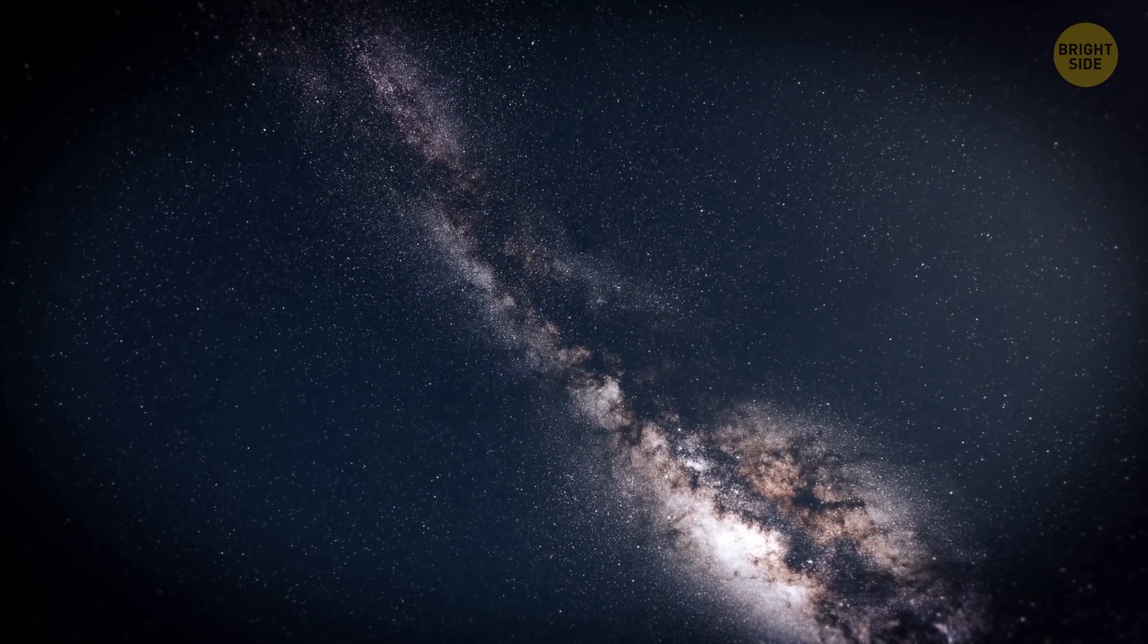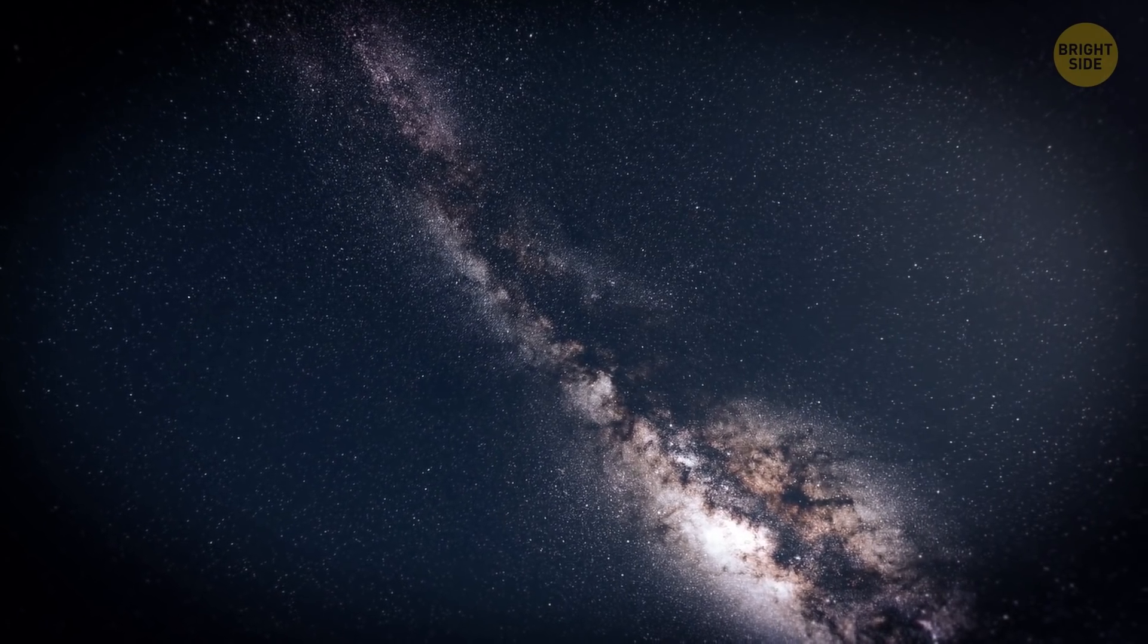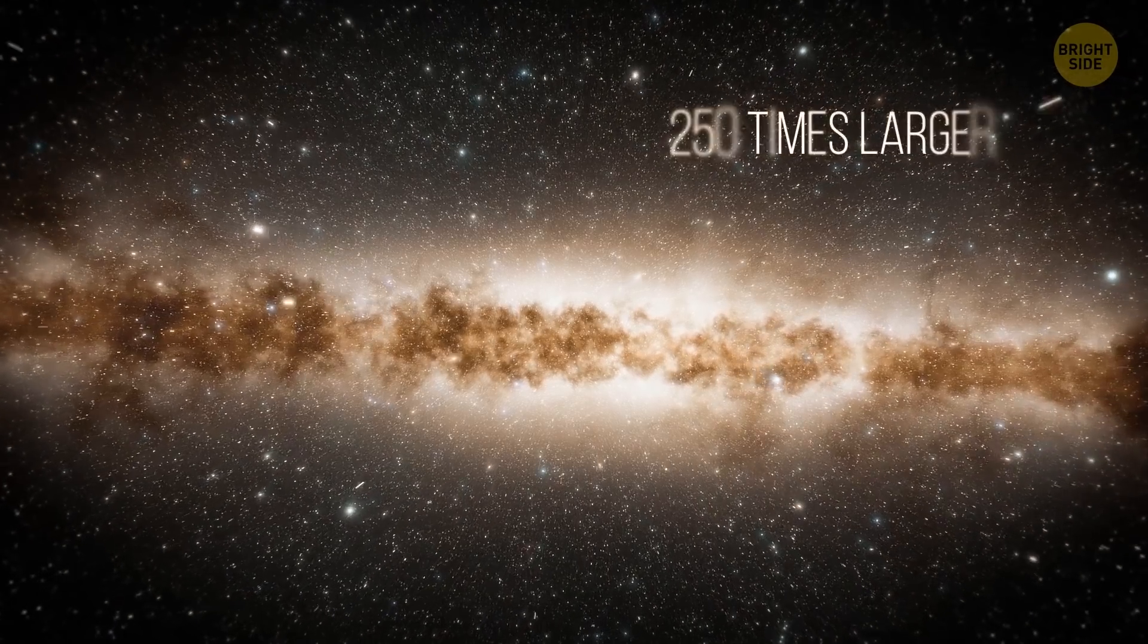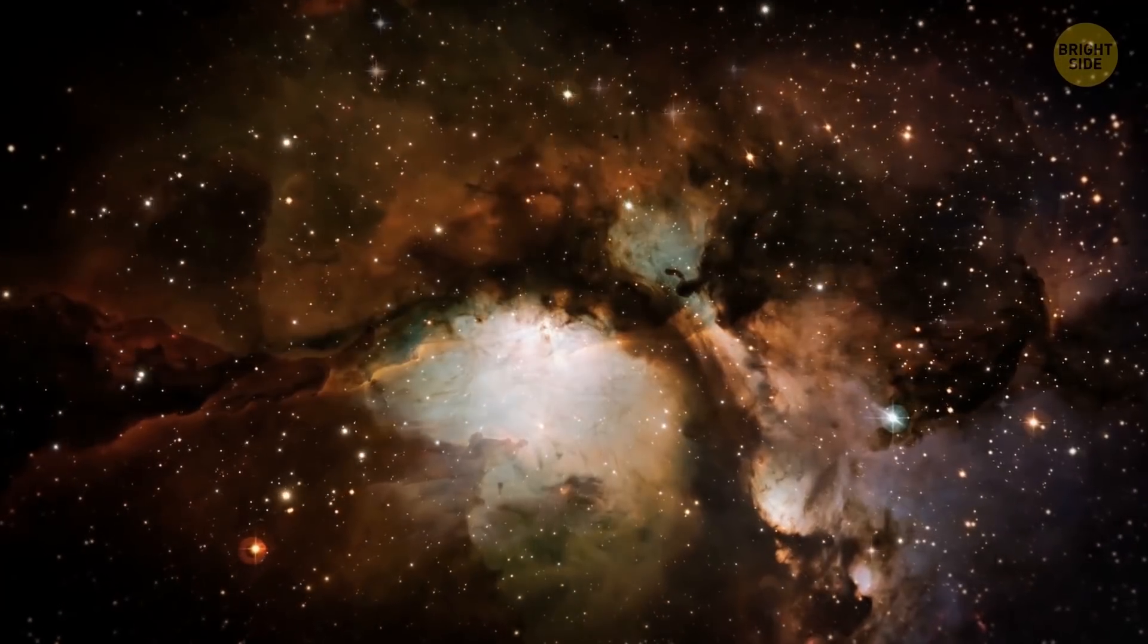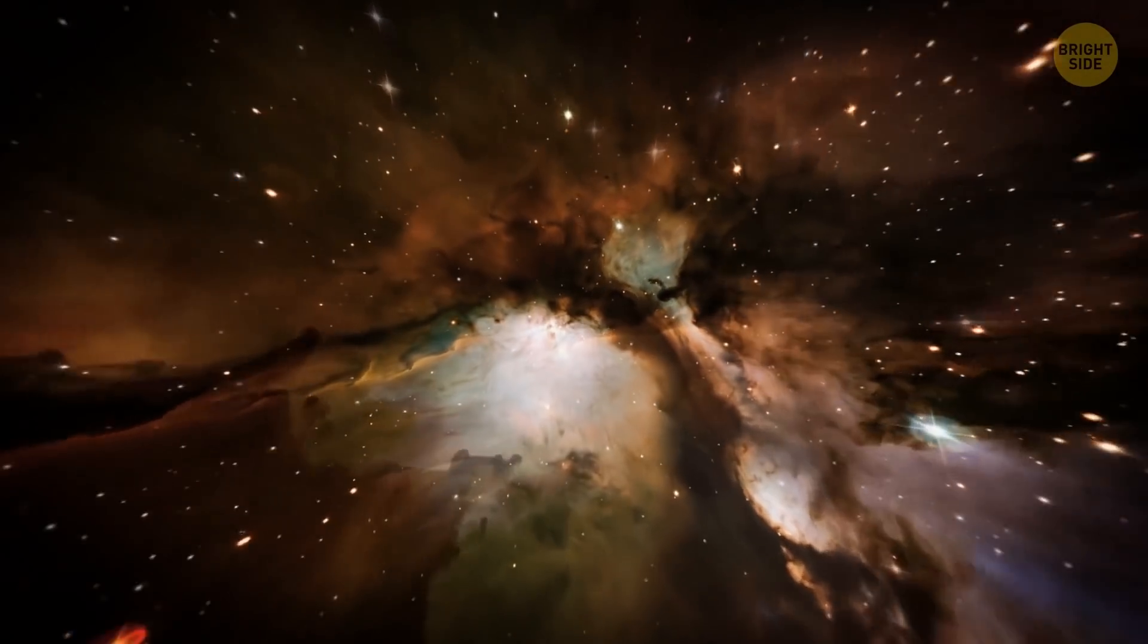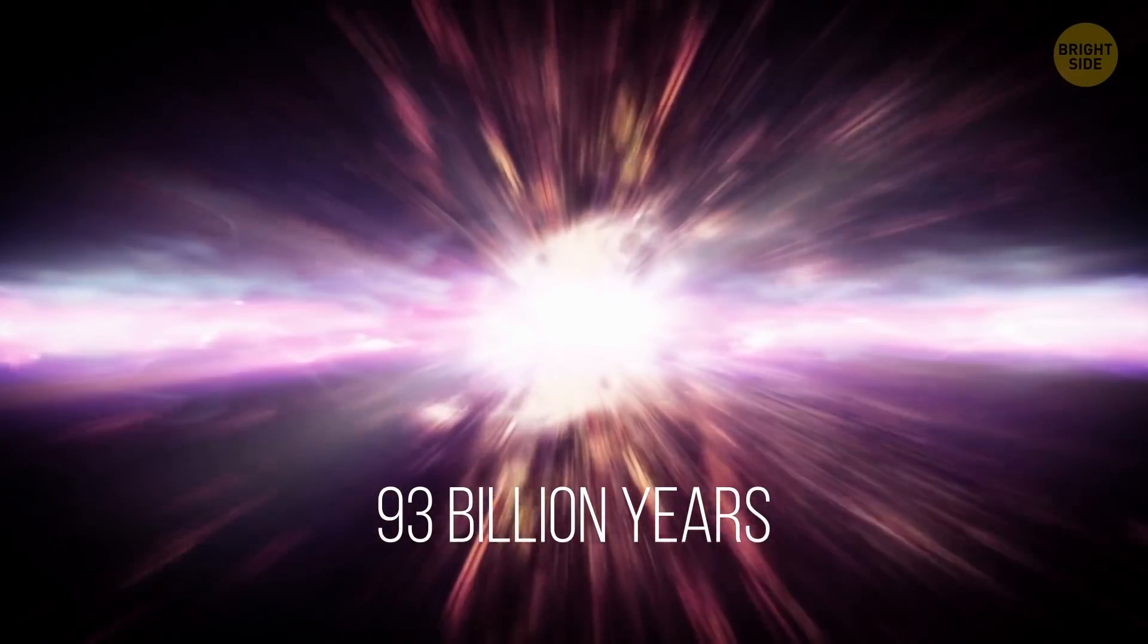Today, astronomers can observe only part of the universe. The real thing is probably 250 times larger than what we can see. If you travel from one edge of the observable universe to the other, going the speed of light, it would take you 93 billion years.